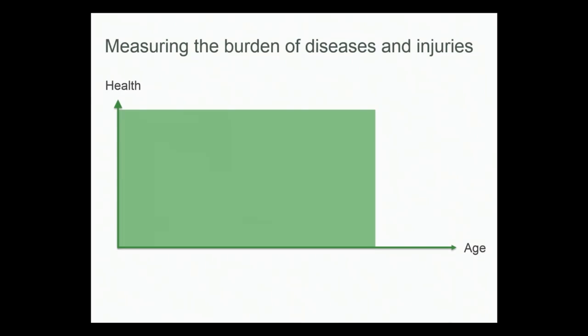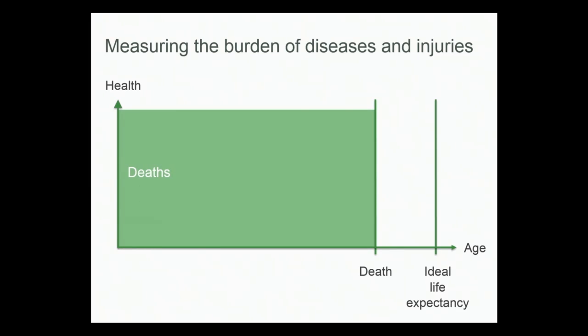So how do we do this? What are the metrics we use to measure disease burden? Let's look at how health plays out over a lifetime. In an ideal case, we live a long, healthy life until we die. If you count the number of deaths from a given disease, it's a good first measure. However, a death at age 5 is not the same as a death at age 80. So if we assume a realistic ideal life expectancy and count for every death how many years are lost between the age of death and that life expectancy, we get a measure called years of life lost — a life equivalent of premature mortality.